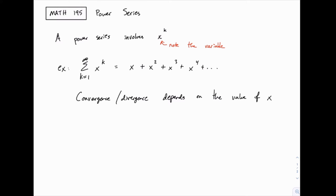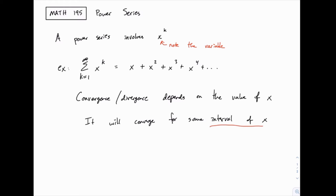Some values of x will make this series converge, and some values will make it diverge. The main goal with a power series is to answer the question: what values of x make this converge? When you encounter a power series, that will be the question. And when we find those values, we'll discover that a series converges for values in some interval. We call this the interval of convergence.